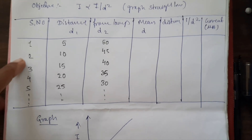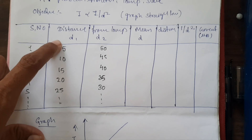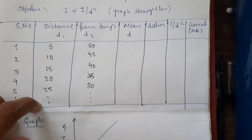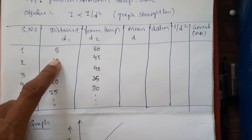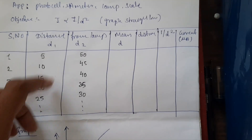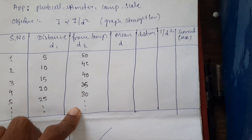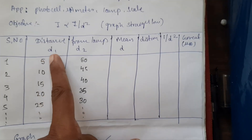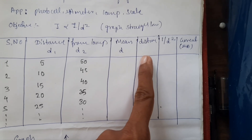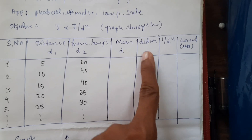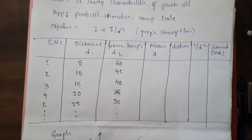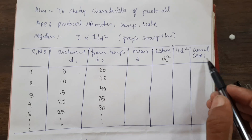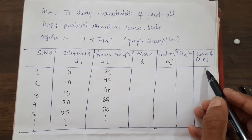Here is the tabular column for this experiment. Note down the increasing distance between the photo cell and the source, starting from 5 centimeters up to 50 centimeters. Note down the current in increasing order, then decrease the distance and note down the current again — it should be the same. Take the mean of distances d1 and d2, then compute 1/d², squaring the distance, and note down the corresponding current value in microamperes.